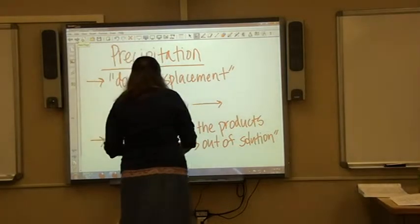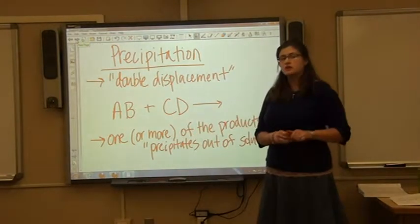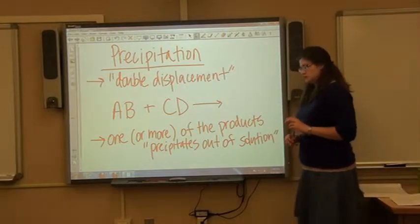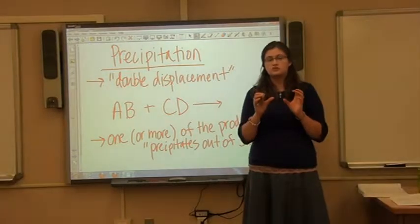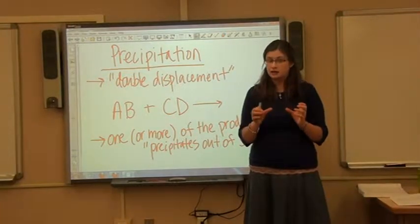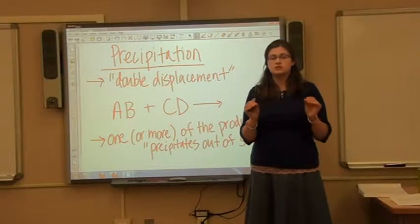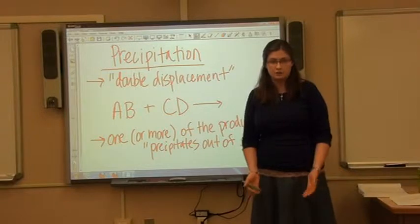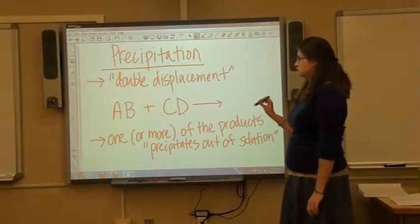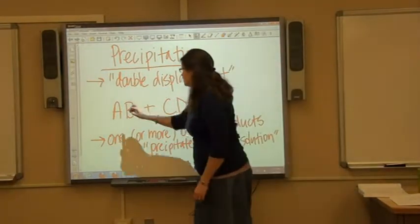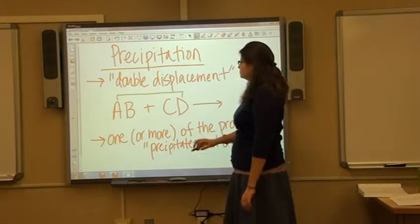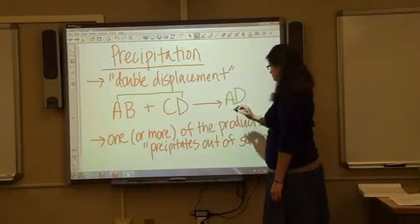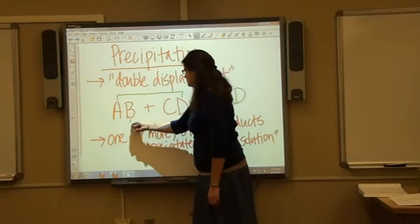Let's talk about what a precipitation reaction is. It's a kind of what we call a double displacement reaction. In a double displacement reaction, you have two sets of usually ionic compounds, and they are going to switch partners or swap partners so that you form two completely new compounds.